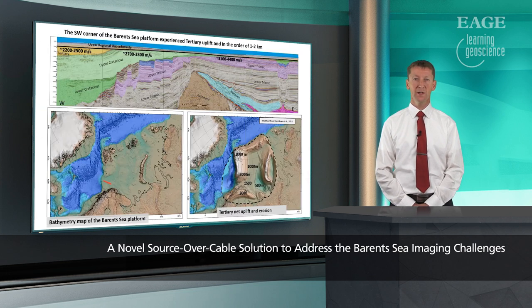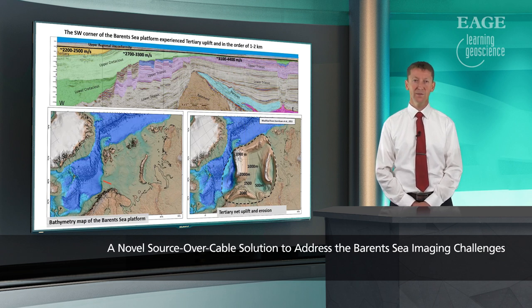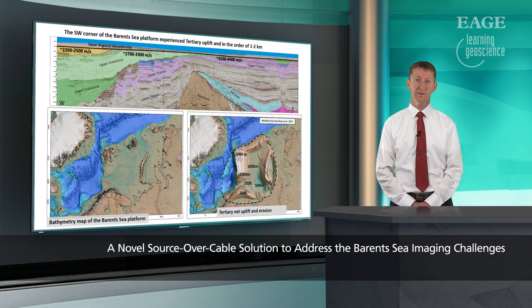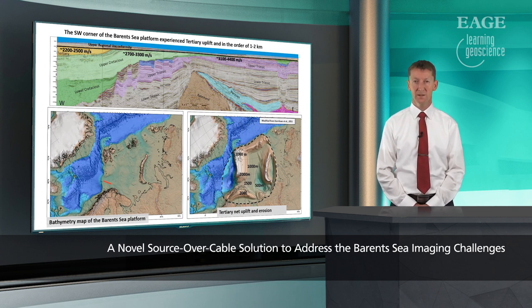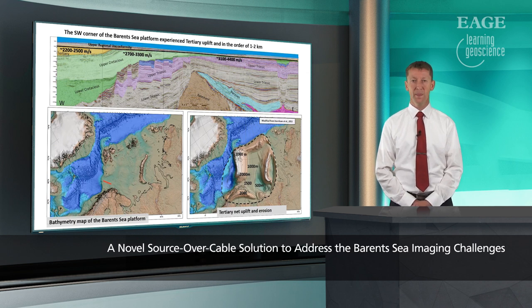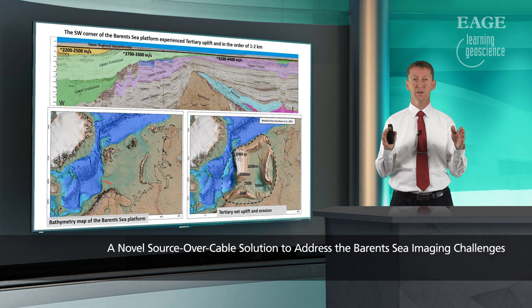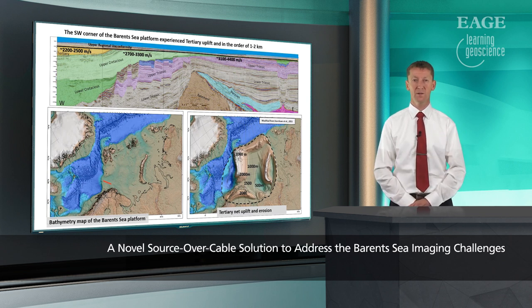The Barents Sea in this particular area has a heavy large uplift, and you can see in this image that velocities are very fast in the shallow part of the section. This means it is difficult to penetrate signal energy — it will quickly bounce off to the sides at larger angles. This is a common problem for the whole Barents Sea area due to this very high Tertiary uplift.